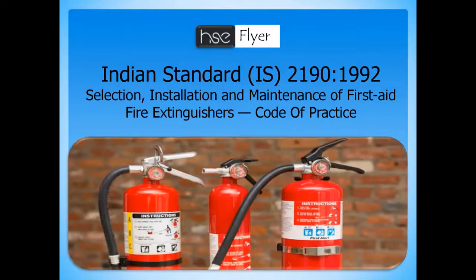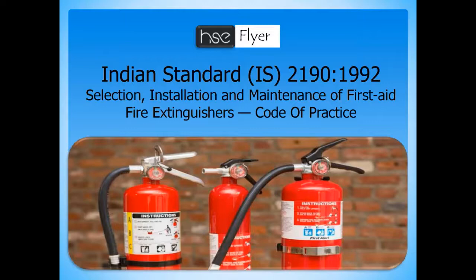Hi everyone, welcome to our HSE Flyer channel. In this video we are going to discuss IS code — Indian Standard 2190. In every organization, everyone knows different types of fire extinguishers and where to use them, but some people and non-safety professionals who are not properly trained still have doubts. To clear those doubts, I've brought you IS Standard 2190, simplified in this video. This IS 2190 covers the selection, installation, and maintenance of first-aid fire extinguishers.